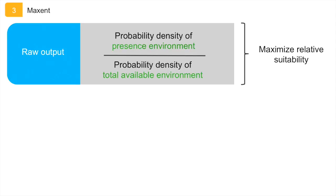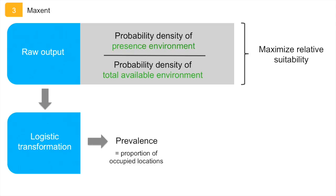For easier interpretation of the results and to provide an estimate of the probability that a species is present in a given location, Maxent performs a logistic transformation of the raw output. The logistic output takes account of the prevalence of a species, which refers to the proportion of occupied locations. However, the exact prevalence cannot be derived from presence-only data.